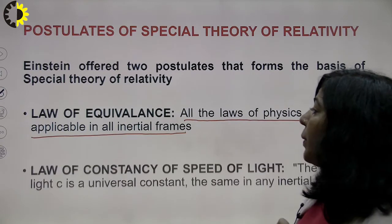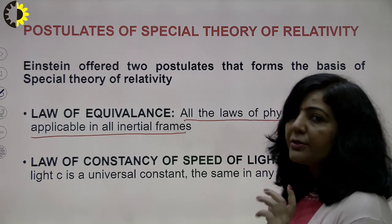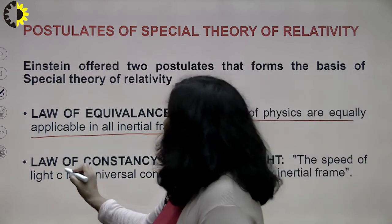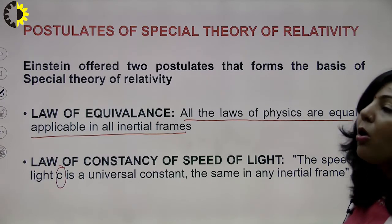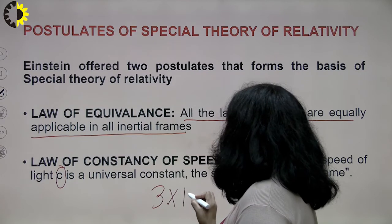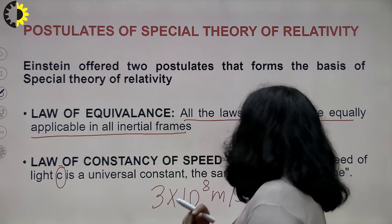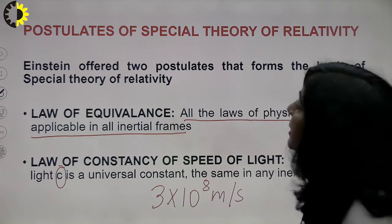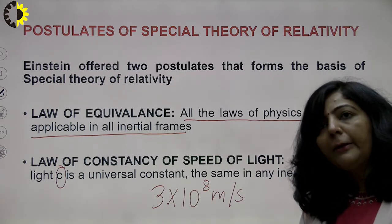The second postulate is the law of constancy of speed of light: the speed of light c is a universal constant and is the same in all inertial frames. It will remain the same in all inertial frames, and that value is 3×10⁸ meters per second. These were the two postulates of the Special Theory of Relativity given by Albert Einstein in 1905.